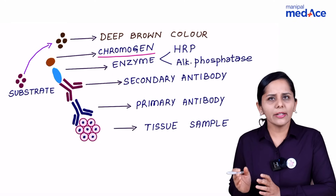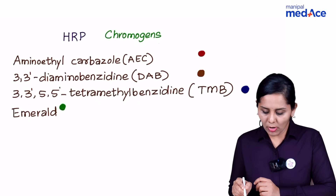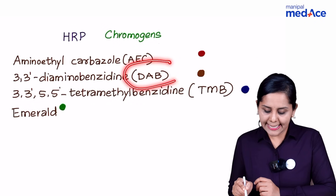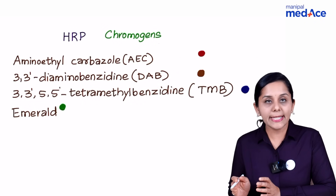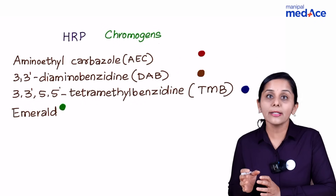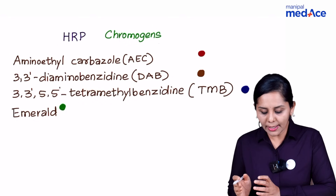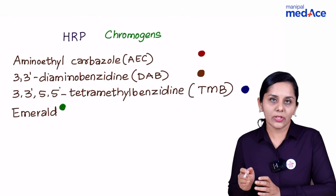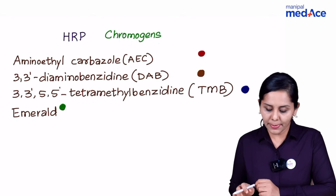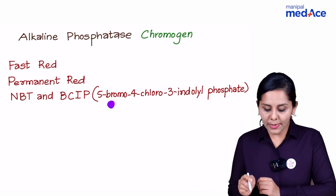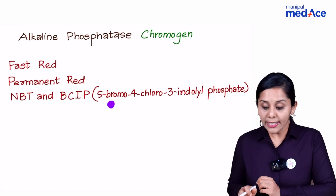The most commonly used chromogen is DAB — that is diaminobenzidine — which imparts a brown color. Remember this. There are many other chromogens: some react in the presence of HRP, and some react in the presence of alkaline phosphatase.